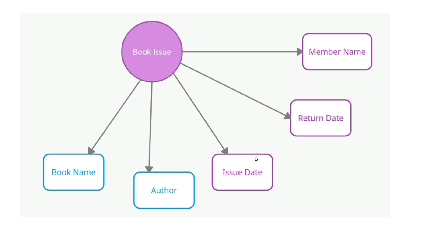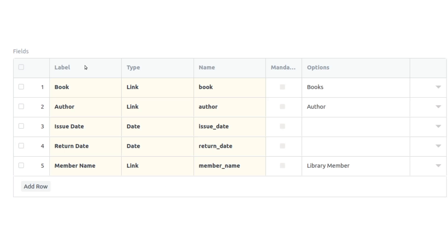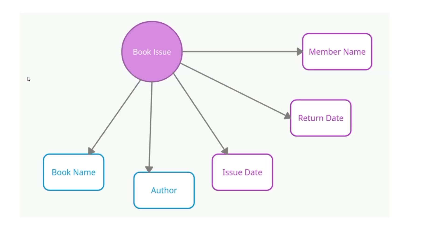If you select an issue date of 7th September, you may want the return date field to automatically update to seven days later. For this you'll need to write a custom script for the Book Issue doc type. This is a basic example — for more customization you'll need to add custom scripts and server-side scripts.